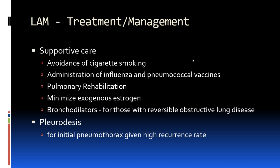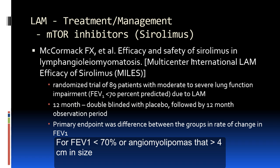Treatment for LAM consists of two parts: supportive care and pharmacological treatment. Supportive care includes avoidance of cigarette smoking, administration of all vaccines, pulmonary rehabilitation, minimizing exogenous estrogens, and bronchodilators for patients with decreased FEV1. If a patient has a pneumothorax, pleurodesis should be performed because the recurrence rate is high — up to almost 70%.